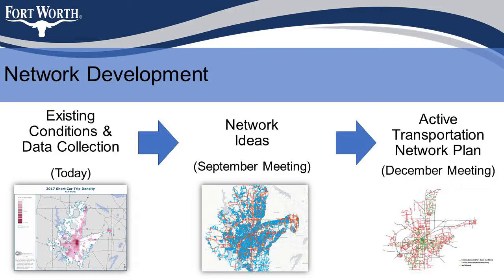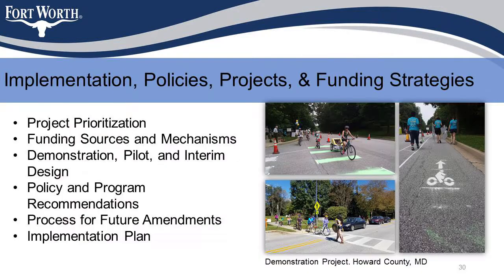Once we complete the existing conditions analysis, we'll move on to developing the network. We'll take the existing conditions and start developing some initial ideas — that's the September meeting I mentioned — and then make preliminary and final recommendations. A really key step is being strategic: with the limited resources any city has, we want to hit the top priorities. We'll develop an implementation plan that scores each project and identifies the ones that need to be done in the short term for the biggest bang for our buck, out to a 20-year timeframe for more aspirational projects.